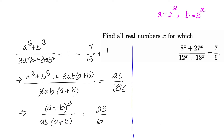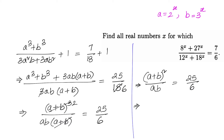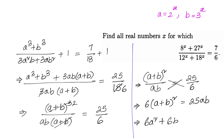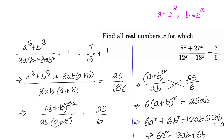Cancelling (a+b) from numerator and denominator gives (a+b)² / (ab) = 25/6. Cross-multiplying: 6(a+b)² = 25ab. Expanding: 6a² + 12ab + 6b² − 25ab = 0, which simplifies to 6a² − 13ab + 6b² = 0.